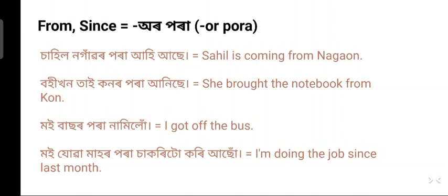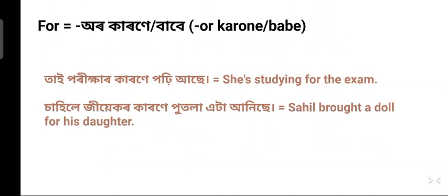Here 'or para' means 'since' and it can also mean 'for'. For example: 'I am doing the job for three months' — in English we use 'for', but in Assamese here we also use 'or para'.